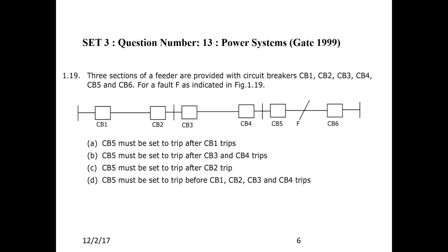Next question: Three sections of the feeder are provided with circuit breakers CB1, CB2, CB3, CB4, CB5, and CB6. For a fault at F between CB5 and CB6, what will happen? There are three sections: section A has CB1 and CB2, section B has CB3 and CB4, section C has CB5 and CB6. The fault is in section C, so CB5 and CB6 must trip first, before CB1, CB2, CB3, and CB4. Answer D is correct.